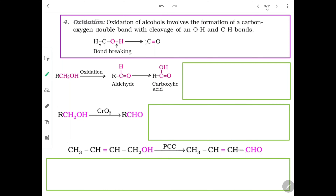We are proceeding toward oxidation, the fourth chemical property of alcohol. This involves O-H bond break as well as C-H bond break. So far we have seen O-H bond break reactions: action of metals and esterification. Then we saw C-O bond break: action of PCl3, PCl5, SOCl2, and action of HX. Now here the third type involves both O-H break and C-H break.